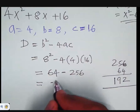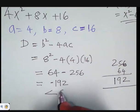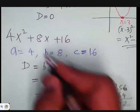192. Bigger number is negative, so negative 192. This discriminant is less than zero. It is not equal to zero, so this expression is not a perfect square.